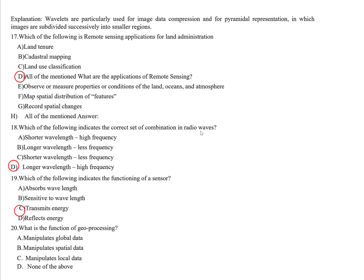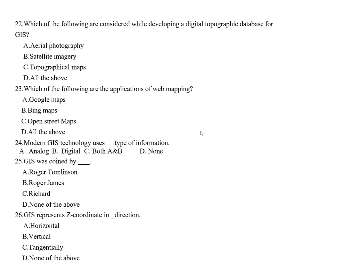Question twenty: What is the function of geoprocessing? Options include manipulates global data, manipulates spatial data, and manipulates local data. The correct answer is manipulates local data. Geoprocessing relates to geocoding of images, which involves manipulating local data.